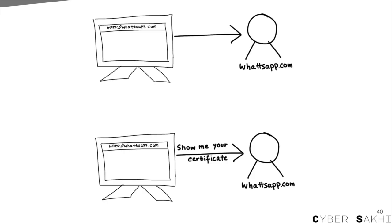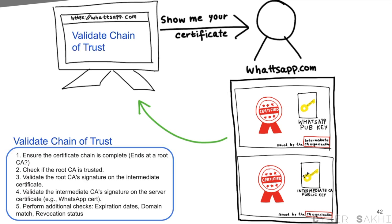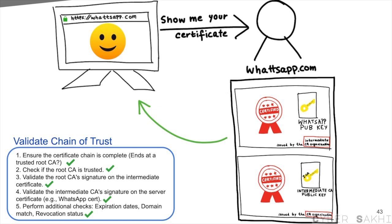So when you connect to WhatsApp.com, your browser automatically asks for WhatsApp's digital certificate. WhatsApp's server sends back something like: here's my certificate signed by CA-X, and here's CA-X's certificate signed by root CA-Y. Your device ensures the chain is complete — does it end at a trusted root CA? Then it validates the root CA's signature on the intermediate CA cert, checks whether the intermediate CA's signature on the server certificate is valid, whether the certificate is unexpired, and whether the domain name matches WhatsApp.com. If everything looks good, the browser accepts the certificate and uses the public key inside it to safely exchange symmetric keys. If even a single step in this verification fails, the browser throws a scary warning that the certificate is untrusted.